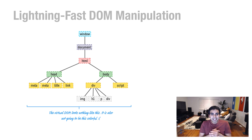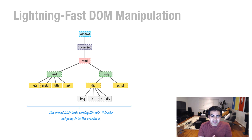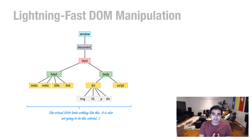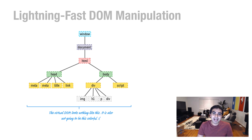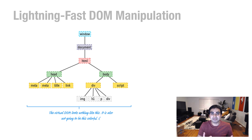Second, React provides lightning-fast DOM manipulation. The way it does it is by figuring out the minimal set of changes needed to represent a change on the screen. This is done by using what's called a virtual DOM — not by modifying the DOM directly, but by modifying an in-memory representation of the DOM, and then from there figuring out the most optimal path for each browser to make these changes without causing the performance implications that DOM manipulation has today.